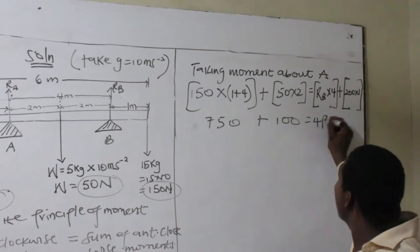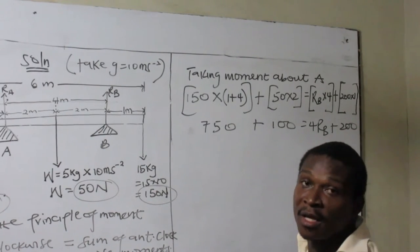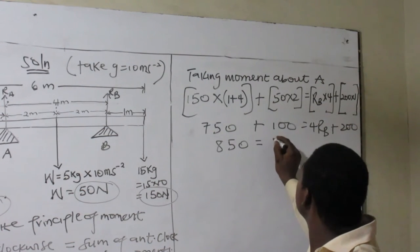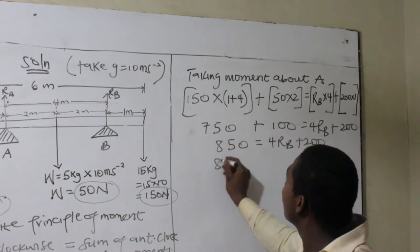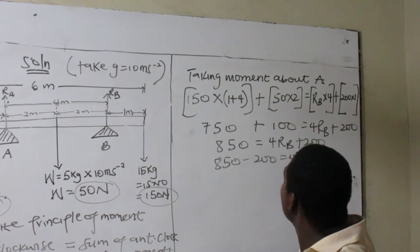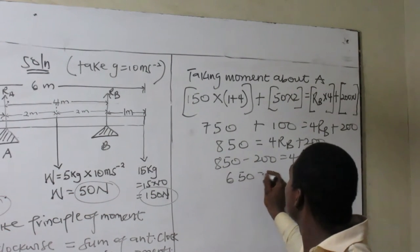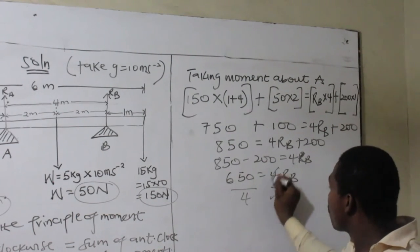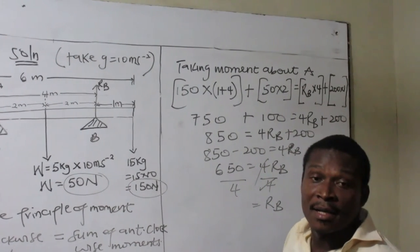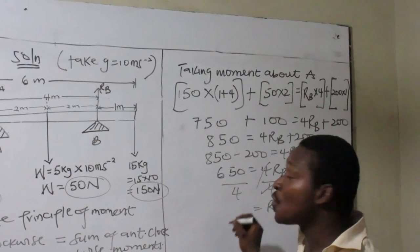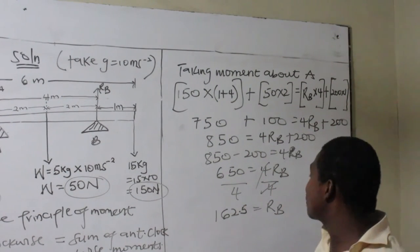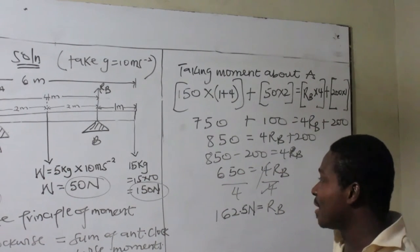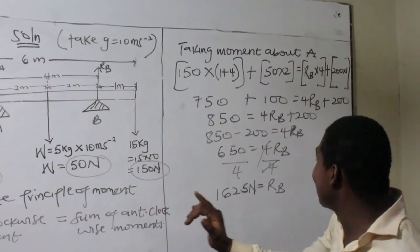So RB has a distance to the line of action. Now: 150 times 5 equals 750, plus 50 times 2 equals 100, giving 850 on the clockwise side. That equals 4RB plus 200 on the anti-clockwise side. So 850 minus 200 equals 4RB, giving 650 equals 4RB. Dividing through by 4 gives RB equals 162.5 Newtons.